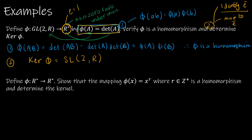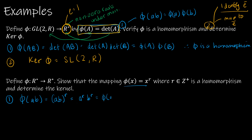For our second example, we're defining phi as a mapping from R* to R* — non-zero reals under multiplication — where phi(x) = x^r and r is some positive integer. We want to show it's a homomorphism and determine the kernel. So phi(AB) = (AB)^r according to the definition. By properties of exponents, that's A^r · B^r, which equals phi(A)·phi(B). Therefore phi is a homomorphism.